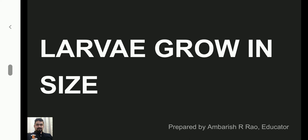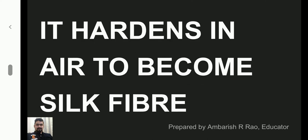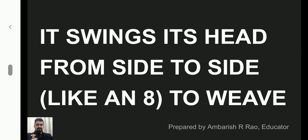Larvae grow in size. The caterpillar secretes a liquid fiber made of a protein from the two glands in its head. This hardens in air to become silk fiber. The caterpillar swings its head from side to side in a figure-eight motion to weave this fiber.